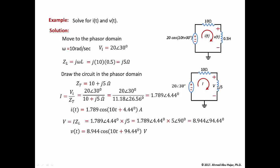In summary: convert the circuit from the time domain to the phasor domain, determine omega, find the magnitude and phase of all sources, convert resistors and inductors to their impedances (ZL = jωL), draw the phasor domain circuit, analyze using complex numbers, then convert back to the time domain. Students should learn to handle complex arithmetic with their calculators as soon as possible.